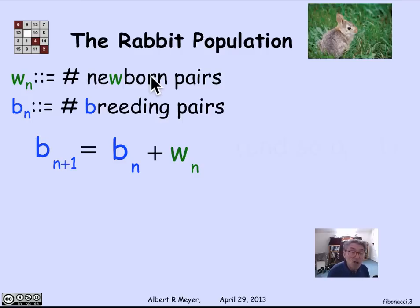By the way, that tells us that B1 is equal to 1. Because we knew that W0 was 1 and B0 was 0. And so you add them and you get that B1 is 1. Now what about Wn plus 1? Well, the newborn pairs this month came from the breeding pairs last month. So Wn plus 1 is simply equal to Bn.